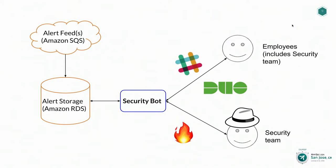SecurityBot, the thing in the middle, is the critical piece. It goes to that database, fetches alerts, figures out what to do with them — whether it needs to reach out to an employee to follow up, get more information, and resolve that alert. That's done through direct messages in Slack. In addition, we have a separate private channel that the security team has access to, where escalations happen. We also use Duo as our two-factor authentication for verifying that when a user acknowledges an alert, it was indeed them.